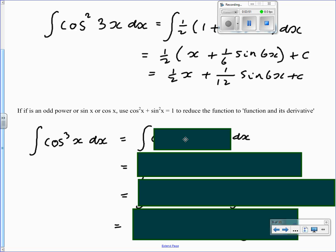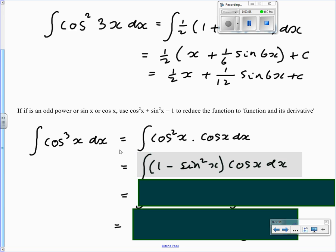Cos cubed x can be written as cos squared x times cos x. Now we can use the identity 1 minus sine squared x equals cos squared x.